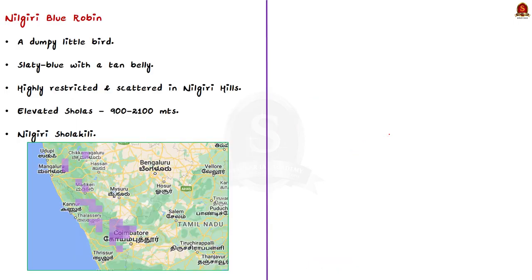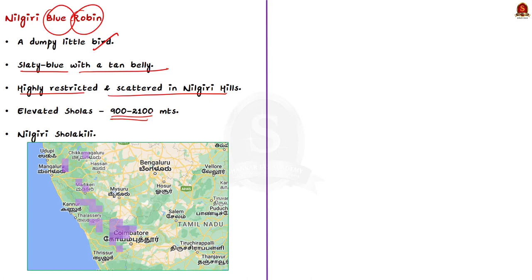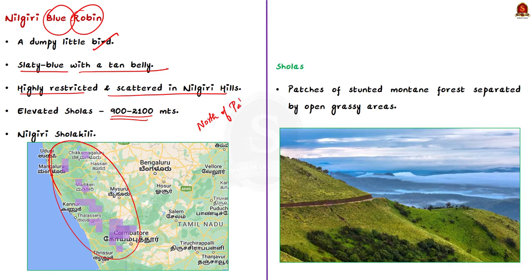The Nilgiri Blue Robin is a dumpy little bird — slaty blue with a tan belly. If you see a blue bird with a tan belly, it is definitely the Nilgiri Blue Robin. But you cannot see it everywhere because it is highly restricted and scattered in the Nilgiri hills, found at 900 to 2,100 meters of elevation in Sholas — that is, Shola forest — mainly north of the Palghat Gap. Sholas are patches of stunted mountain forest separated by open grassy areas. This is how a Shola forest looks, and this is where the Nilgiri Blue Robin lives.